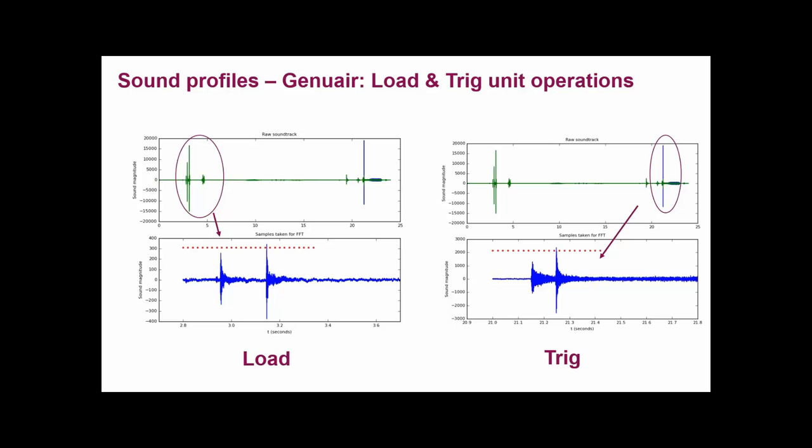Let's look at the sound profiles then when we have the raw data from a Genuair analysis. We have the load and the trig, and the load of course occurs before the trig. In this particular case around three minutes you have the sound profile from the load, and we take away the robot events that are not so important. The trig then, depending on the robot movements and operations, occurs later, typically around 21 seconds in this particular case. That is when the dose is emitted and the device has been moved by the robot to the place where it emits the dose into where the dose is captured.